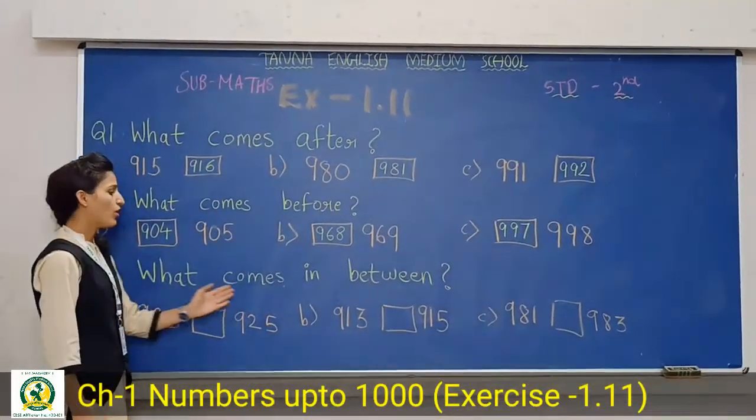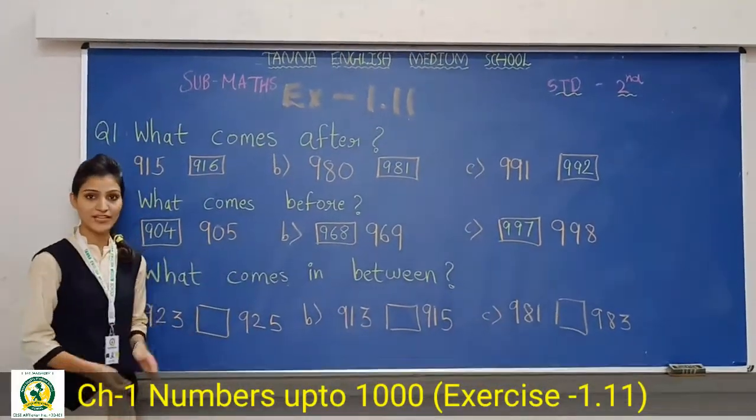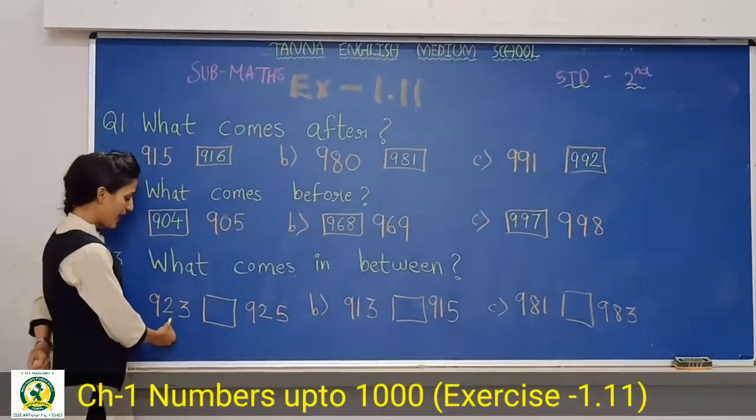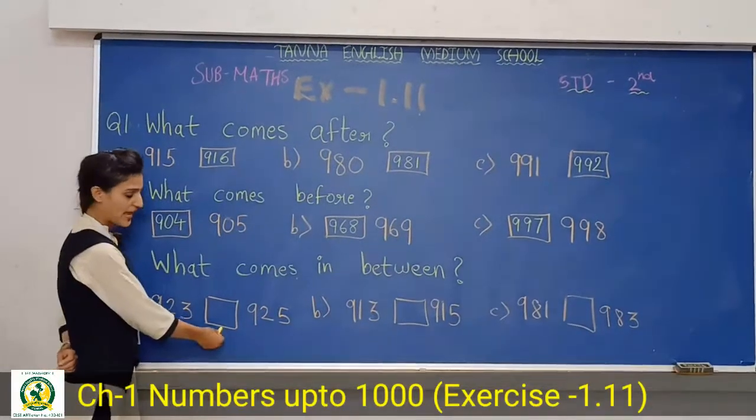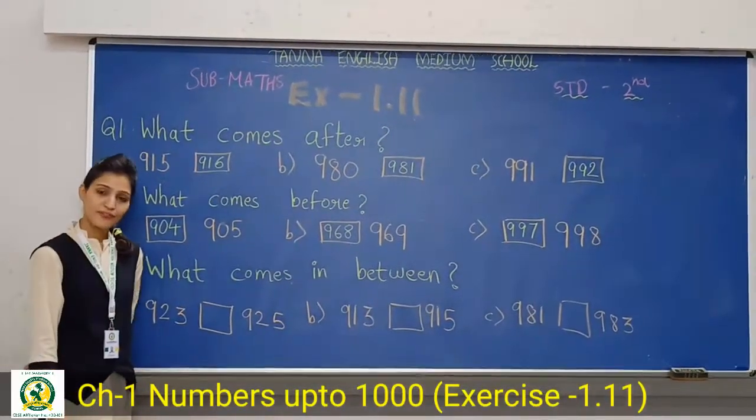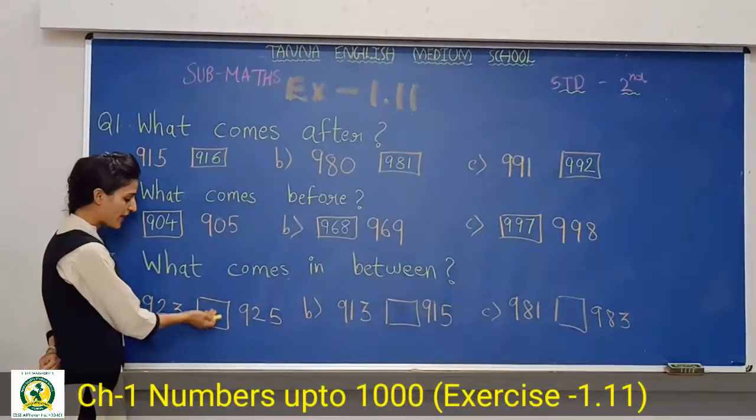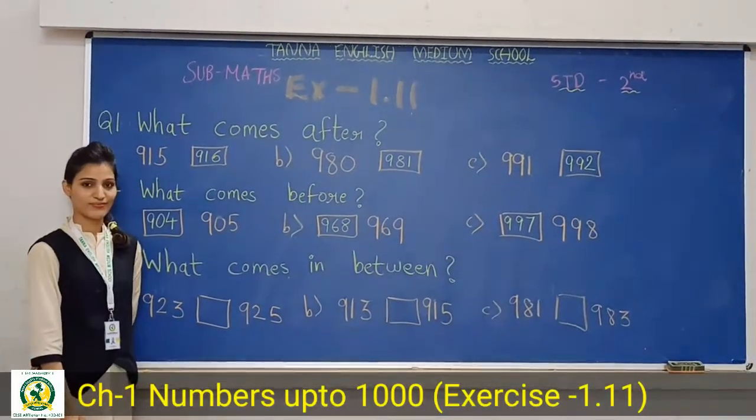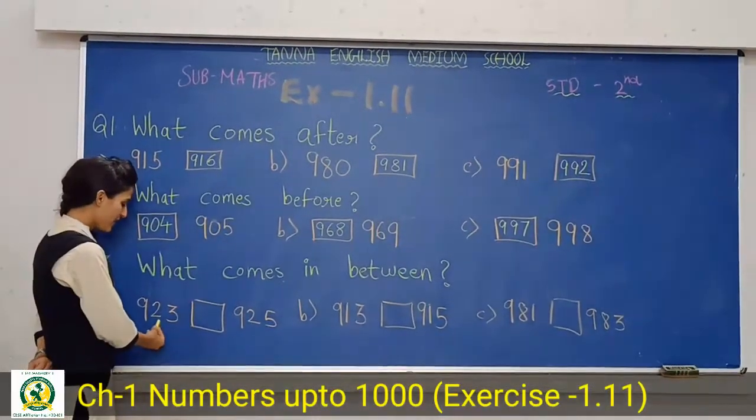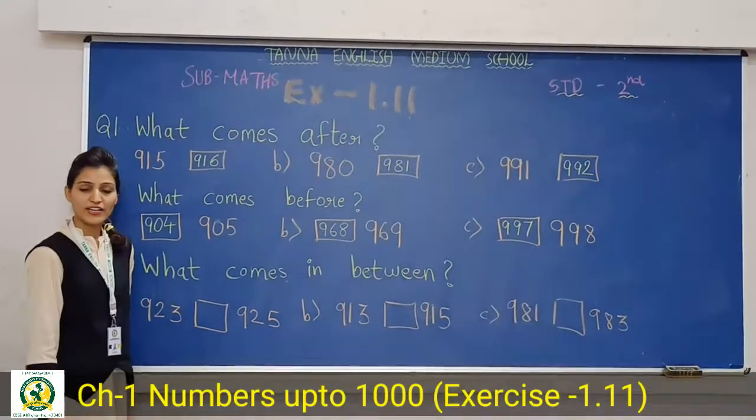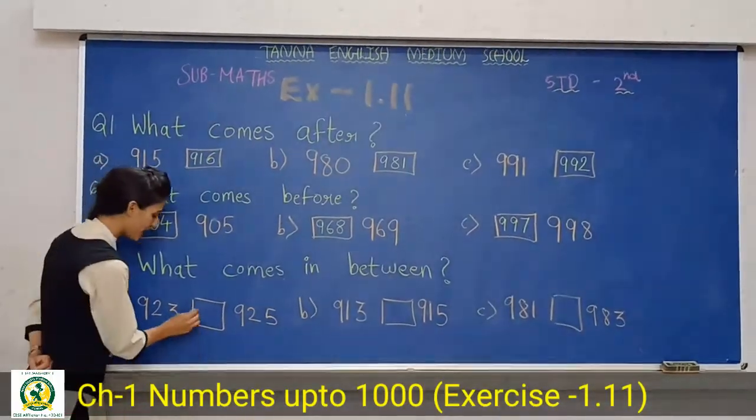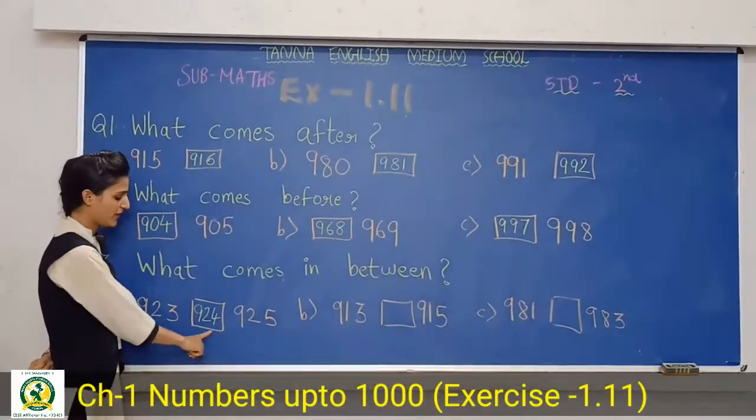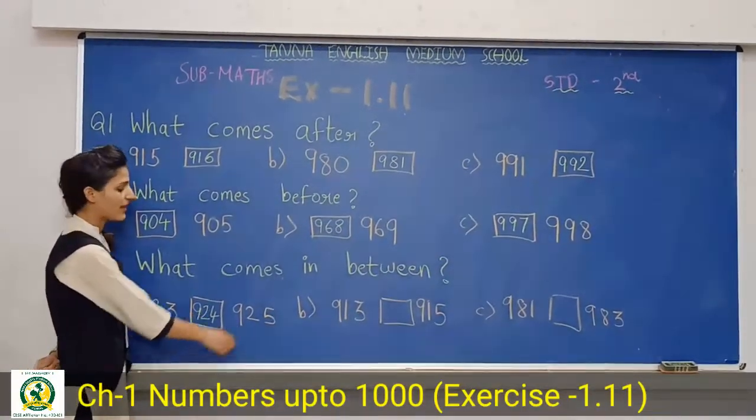Between means in the middle. Which number will come? We have 923, blank, 925. So, what comes after 923 and before 925? Now tell me students, what comes after 923? 924, then 925. Okay? So what comes after 923? 924.